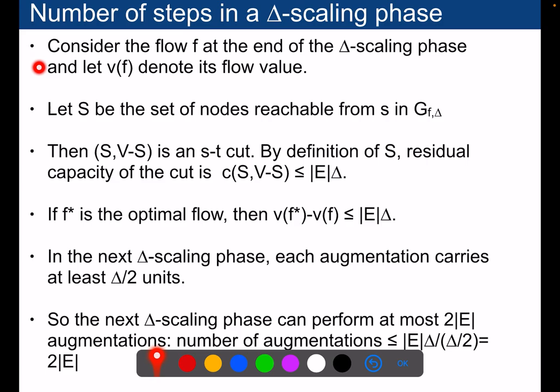We consider the flow f at the end of the delta scaling phase, and this is the value of the flow. These are the set of nodes reachable from the source node in the residual graph with the delta edges that have been removed. We know by the max flow min cut theorem that this is an s-t cut, by definition.